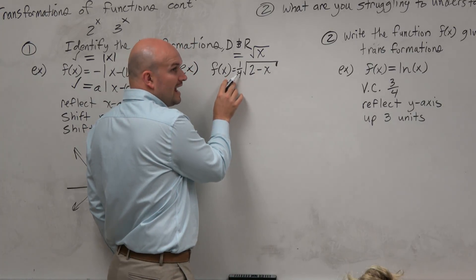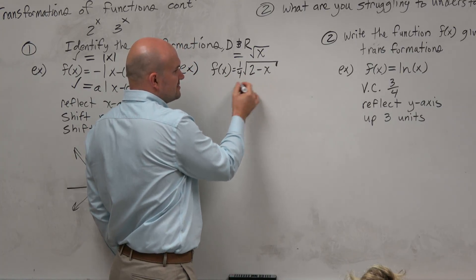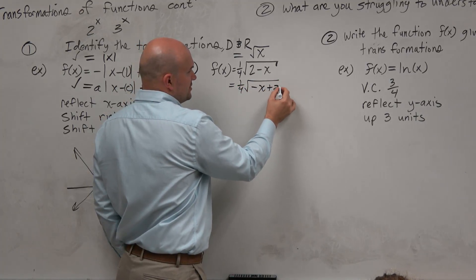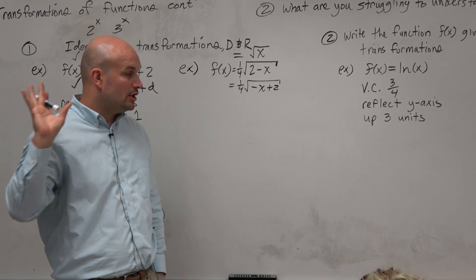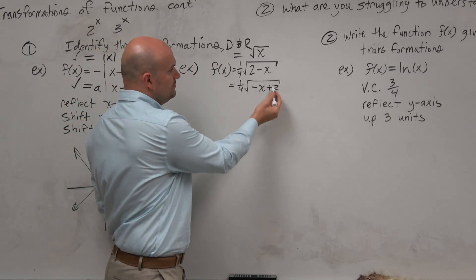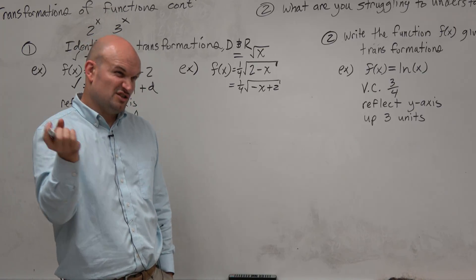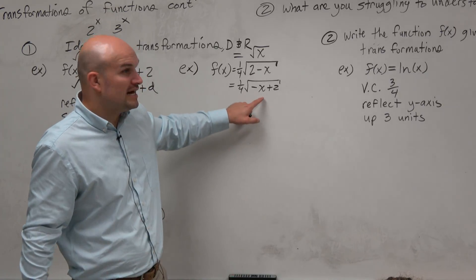We see that we have an a, but I don't really like this. So let's rewrite this as negative x plus 2. Would everybody agree with me that negative x plus 2 is the same thing as 2 minus x? Because that 2 is positive. But again, that's still not really preferred.